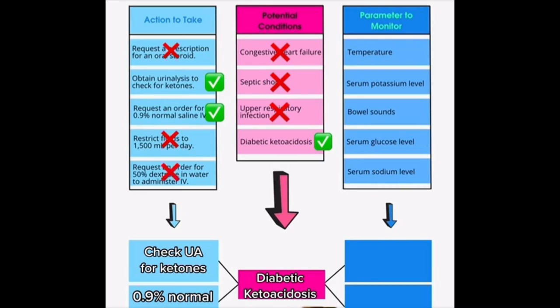The third step is to pick two parameters to monitor to track the patient's progress. Do we need to monitor their temperature? What about their serum potassium level? Yes, we're going to monitor this patient's potassium because there's a risk of hyperkalemia in DKA, and also a risk for hypokalemia during DKA treatment. What about their serum glucose level? Of course, we're going to monitor their blood sugar because they have DKA, and during diabetic ketoacidosis treatment we monitor hourly glucose.